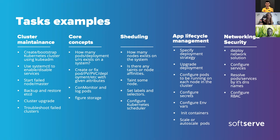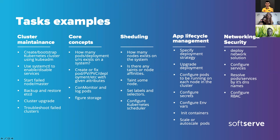A lot of tasks are around core concepts — for example, how many pods are in a deployment on an existing system; you have to check and write the answer to a file. Many tasks involve creating pods, deployments, and volumes with given attributes. You also need to know how to configure storage and monitor logs. For scheduling: tasks include how many nodes exist on a system, exploring the cluster, checking for taints or tolerations on nodes, tasks to taint nodes, set labels or selectors, and configure the Kubernetes scheduler.